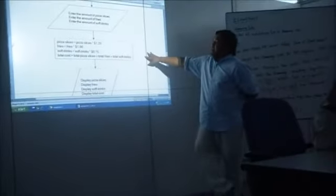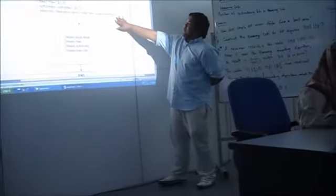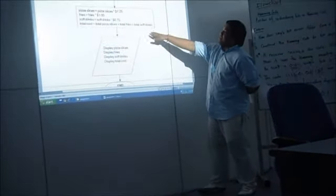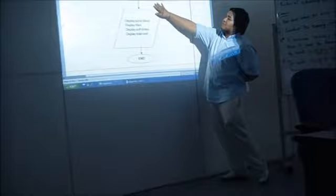And then this is the process. This is the pizza slices times $1.25, fries times $1, soft drinks times $0.75, then total pizza slices plus total fries.